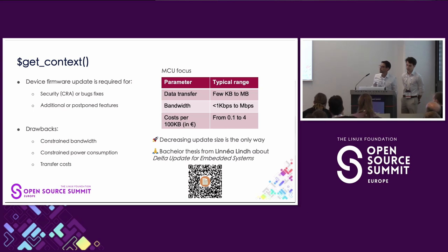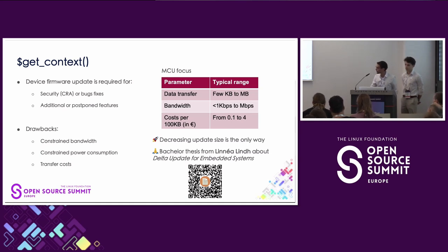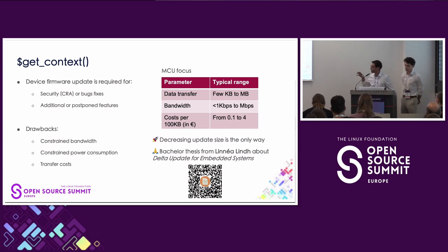Firmware updates also present an opportunity to improve time to market — to postpone some features and launch a product as soon as possible. But the main drawbacks arise when we have constrained bandwidth, constrained power consumption, and transfer costs — for example, on LoRa or LoRaWAN public networks. So we are focused only on MCU targets.